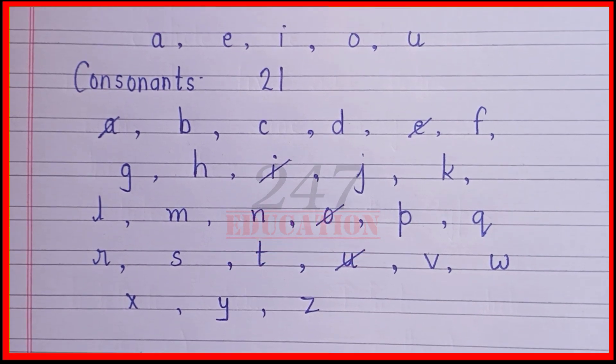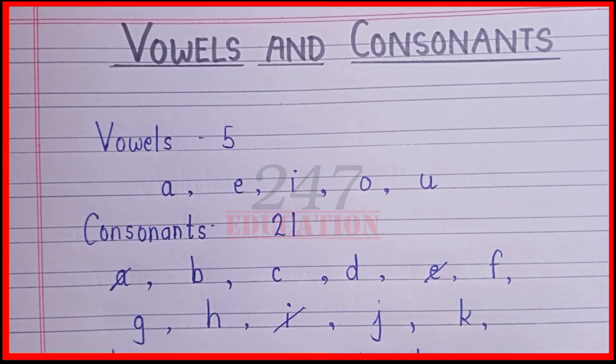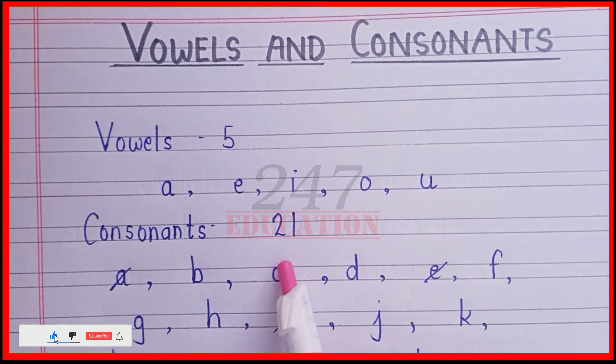Our consonants are 21 and vowels are 5. A, E, I, O, U. Consonants 21.